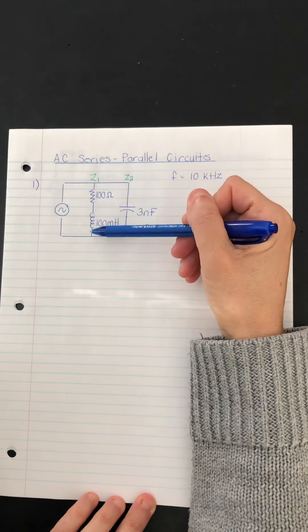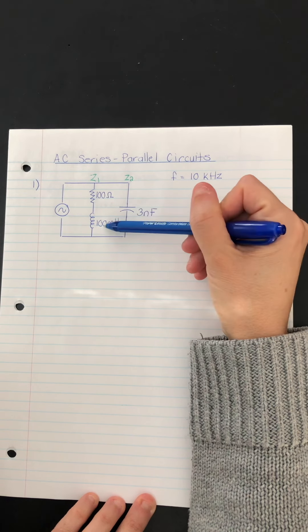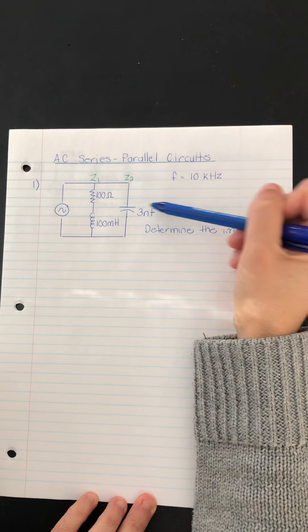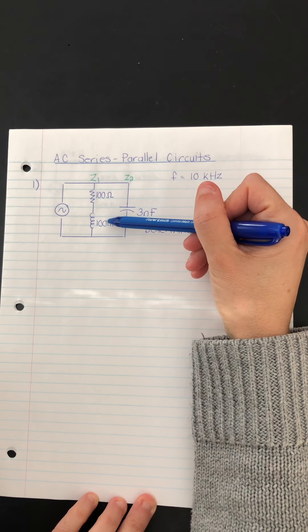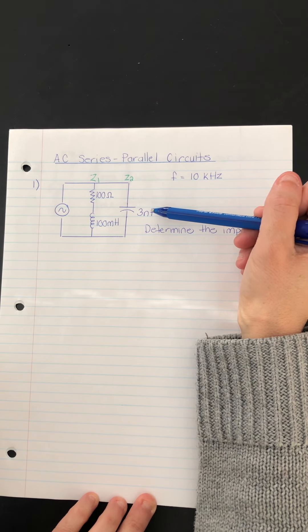Which you'll recall is Z is R plus XLJ minus XCJ. The first thing I'm going to do is actually calculate our XL and XC values, because you can see here that we don't have those values in ohms. We have instead the inductance, which is L, and the capacitance, which is C.